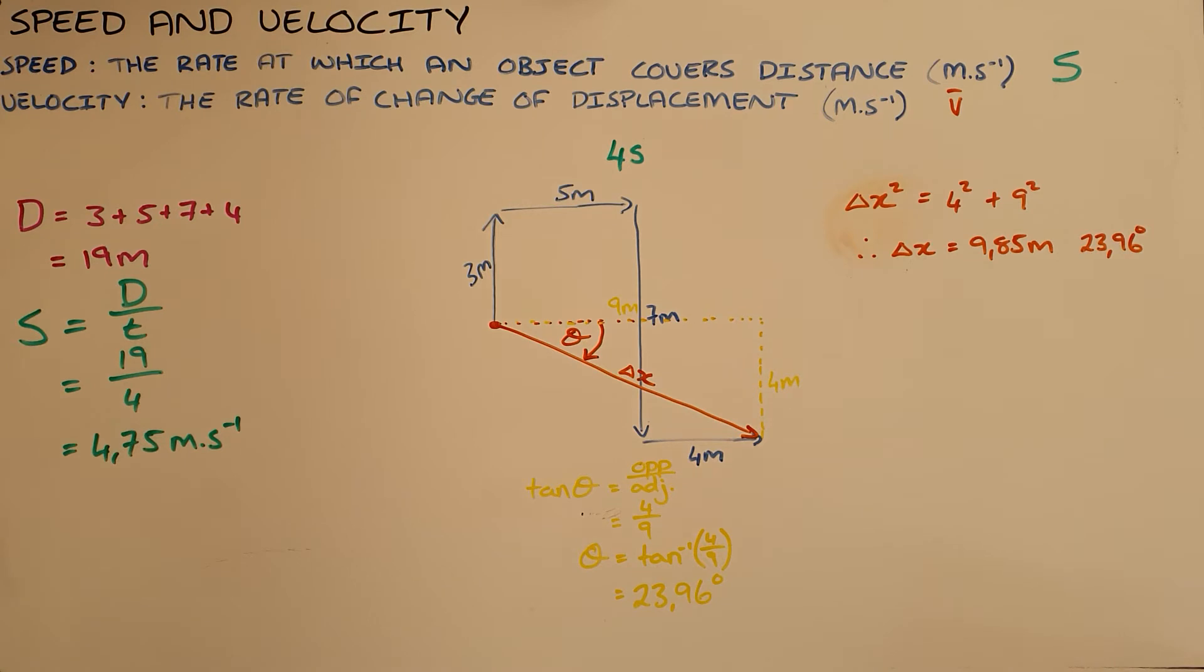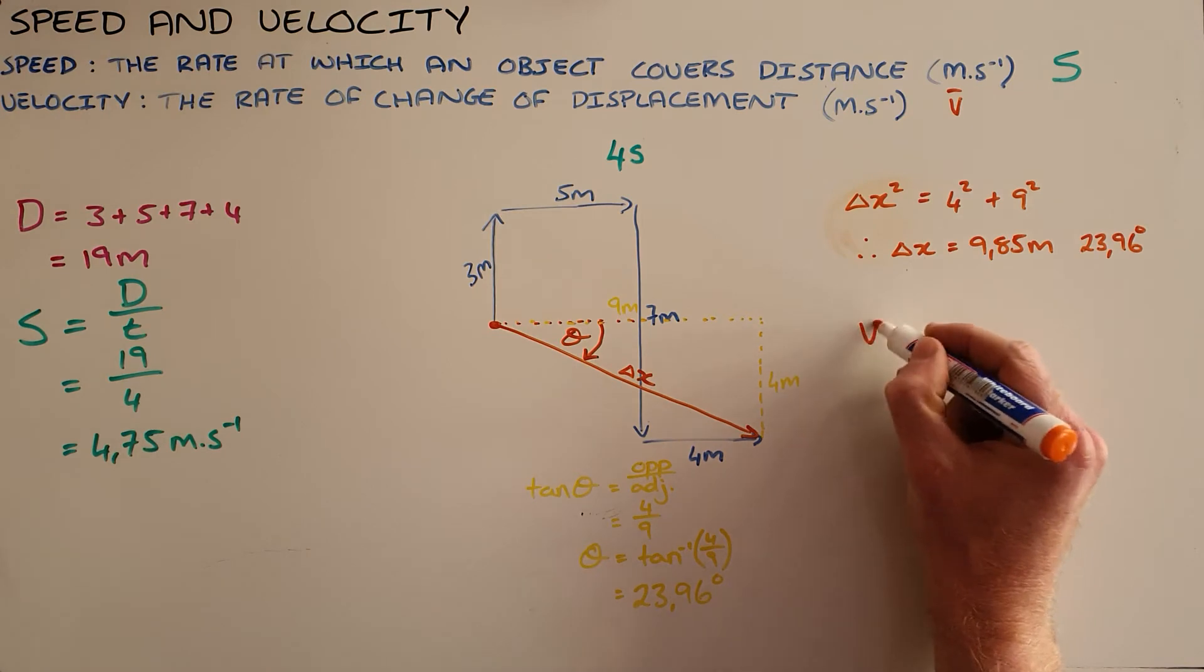It has the symbol V, often written with a line on top to remind us that it is a vector quantity. Therefore it must have magnitude and direction, and it is also measured in meters per second.